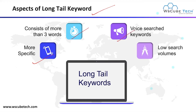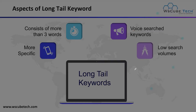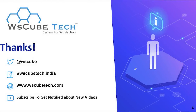In Google, we have the feature of voice search. In voice search you can add your complete query in detail, so for voice searches we can search using long tail keywords. They also have low search volume because they are more specific, and they can give you high conversion. These are the key aspects of long tail keywords, and in our upcoming video we will learn more about them.